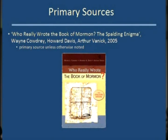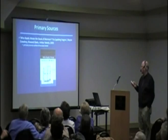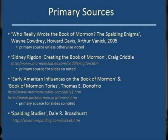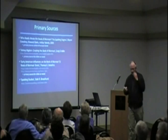My primary source is 'Who Really Wrote the Book of Mormon? The Spalding Enigma,' published in 2005. Unless otherwise noted, that is my primary source, though not my only one. Another source is 'Sidney Rigdon: Creating the Book of Mormon' by Craig Criddle, found online, where he has posted a lot of information I'll address in later slides. I also draw on 'Early American Influences on the Book of Mormon' and 'Book of Mormon Tories' by Tom Donofrio. Finally, I should mention Dale Broadhurst, who has done a lot of original research that these other authors have depended upon.